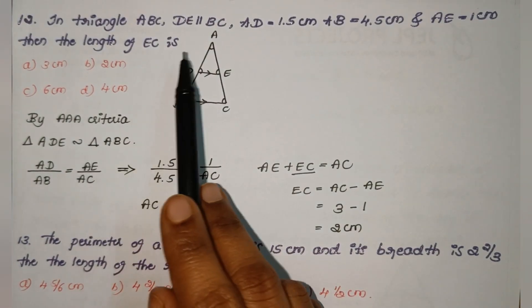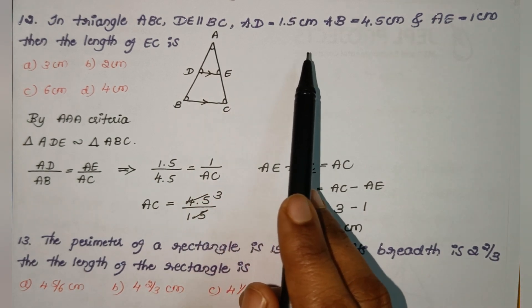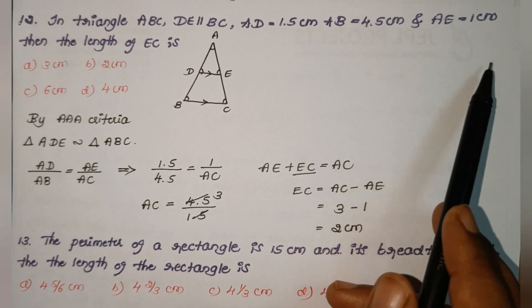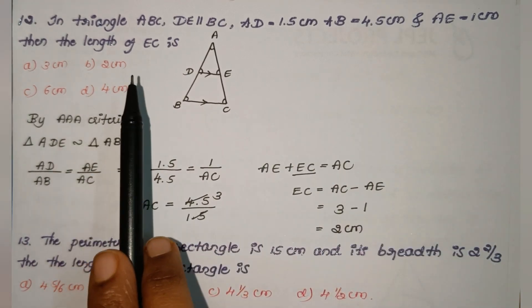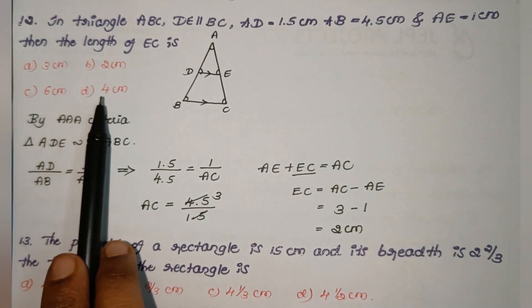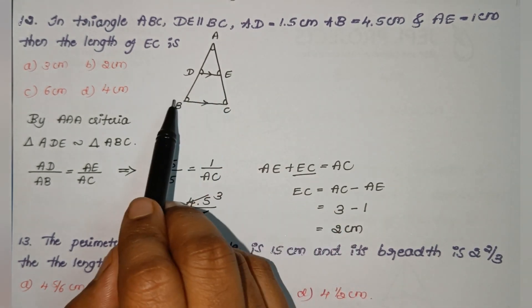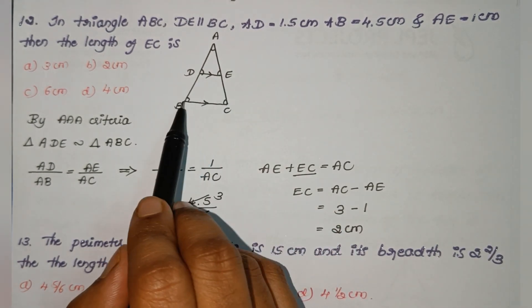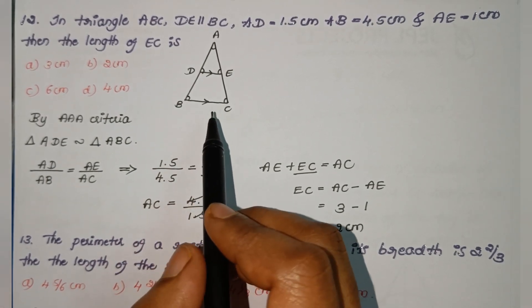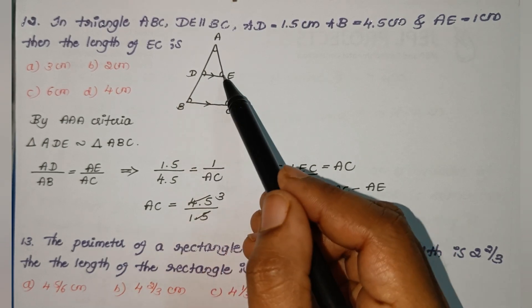Next one: In triangle ABC, DE is parallel to BC. AD = 1.5 cm, AB = 4.5 cm, and AE = 1 cm. Then the length of EC is 3 cm, 2 cm, 6 cm, or 4 cm? Since BC and DE are parallel lines, we have two pairs of corresponding angles, giving us a common angle at A.